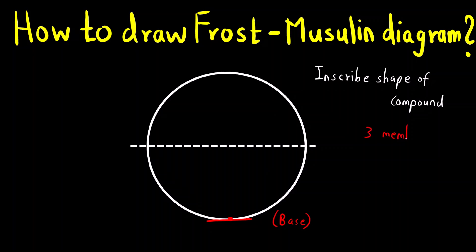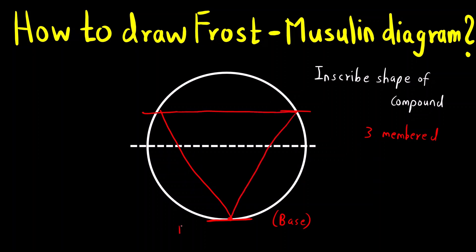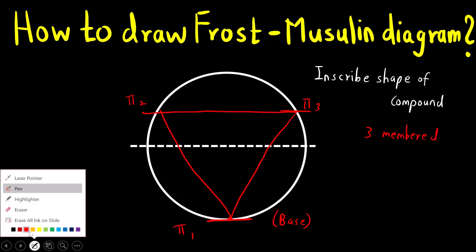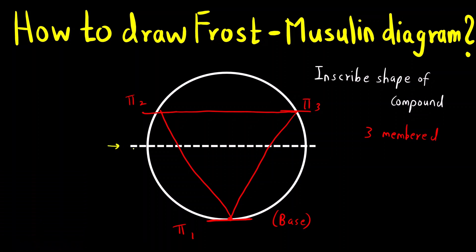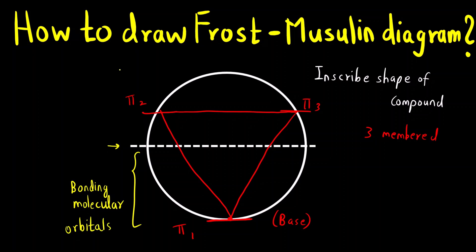For a three-membered ring: one molecular orbital is at the base, then the second and third are drawn above. There are three molecular orbitals: π1, π2, and π3. The middle line separates the bonding molecular orbitals from the anti-bonding molecular orbitals. Below this line are bonding molecular orbitals, which are more stable as they have lower energy. Above this line are anti-bonding molecular orbitals.